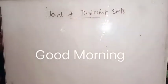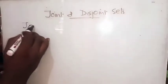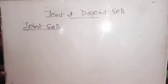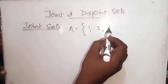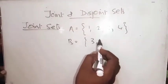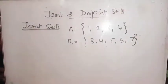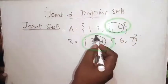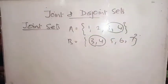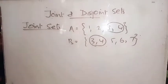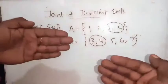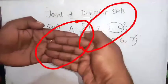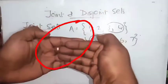Good morning. Let's discuss joint sets. For example, consider two sets like {1, 2, 3, 4}. When you consider these two sets, you can find that both sets have common elements. They have common elements — that means they have an intersection part. Such sets are called joint sets. Joint sets have a common portion between them. If two sets have a common portion, we call them joint sets.